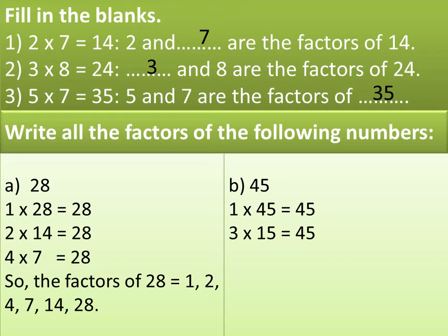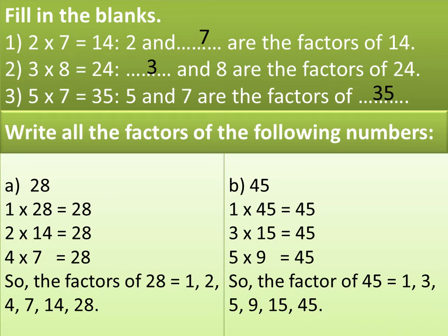Is 45 divisible by 4? No. Take 5. Is 45 divisible by 5? Yes, because the product can be written as 5 multiplied by 9 equals 45. Is 45 divisible by 6? No. Is 45 divisible by 7? No. Is 45 divisible by 8? No. Then we move on to 9, which is already covered. Stop here and write all factors in ascending order. So the factors of 45 are 1, 3, 5, 9, 15, and 45.